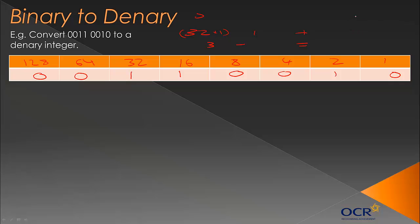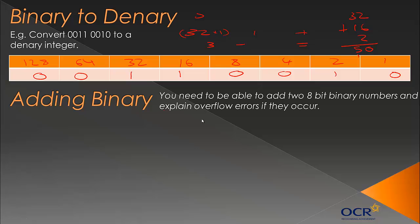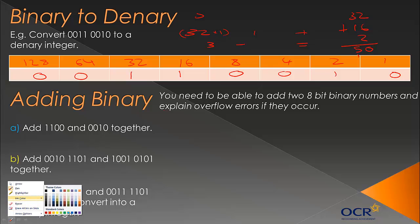So 32 + 16 + 2 can also be worked out using the column addition method. 6 + 2 is 8, plus 2 is 10, so we carry a 1, giving us 50. This addition method will be useful as we move on to adding in binary. You're required to know how to add two 8-bit binary numbers and explain overflow errors if they occur.